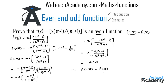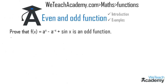Since it satisfies the condition, we call f(x) an even function. Now let us consider another example. Here we have to prove that f(x) = aˣ - a⁻ˣ + sin(x) is an odd function. The given function is f(x) = aˣ - a⁻ˣ + sin(x).